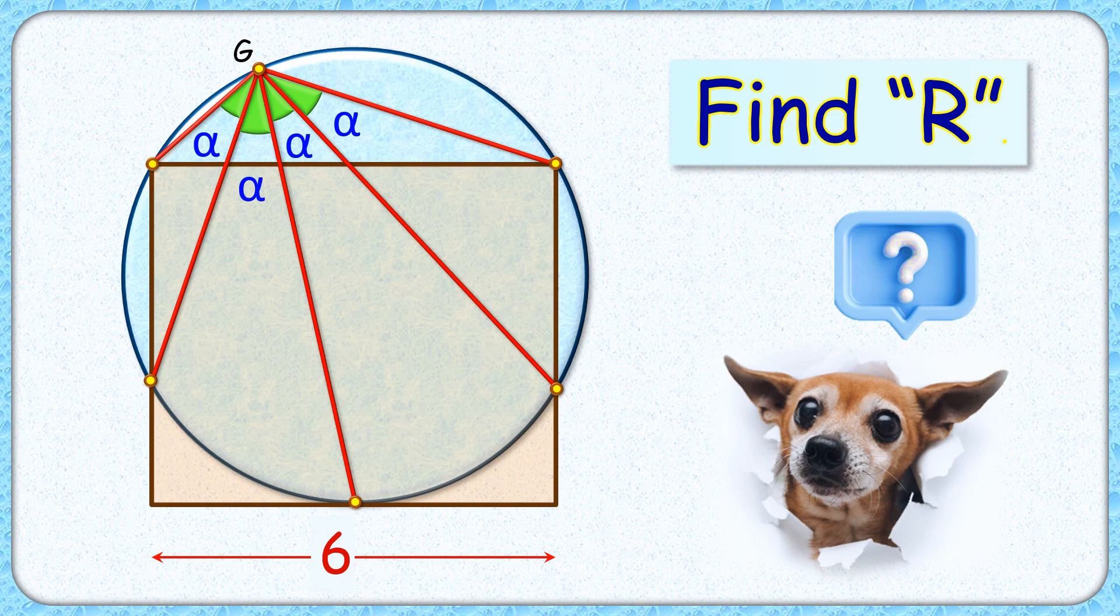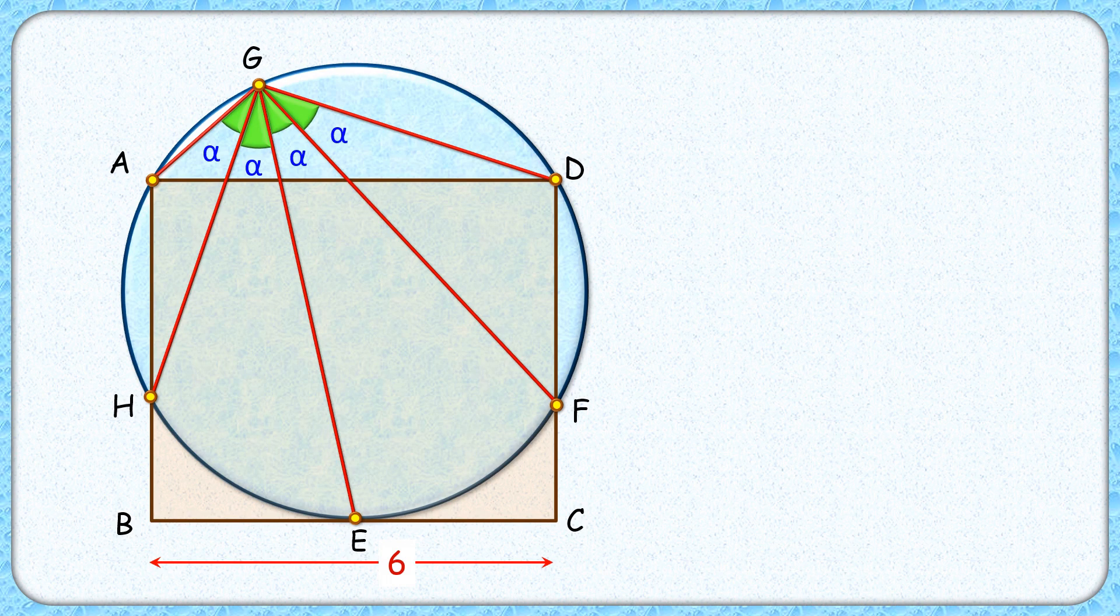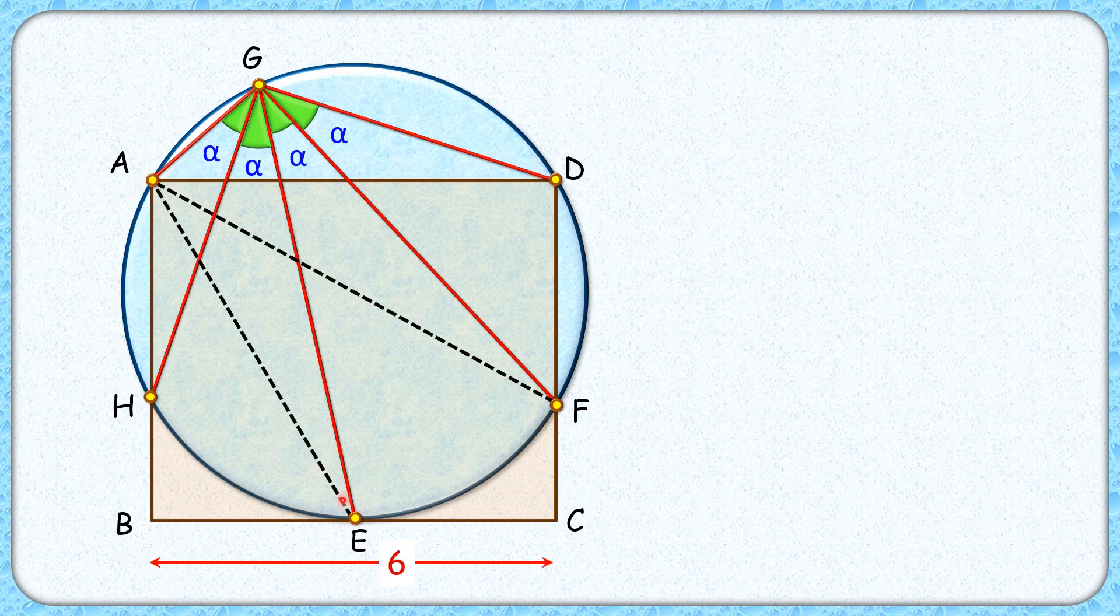Let's check the solution. We'll first find value of angle alpha here and then we'll find the radius of circle. For that, let's first join AF here and AE.